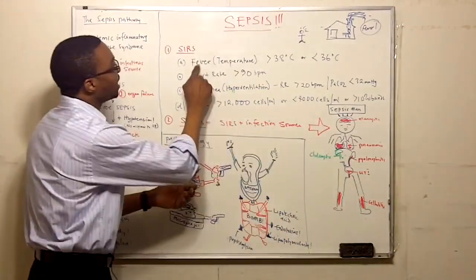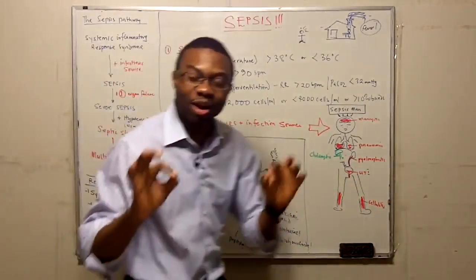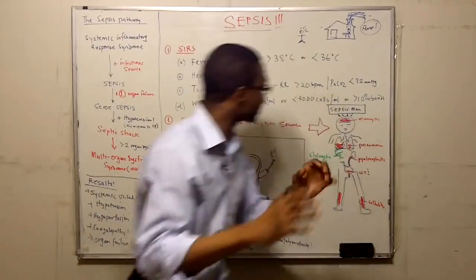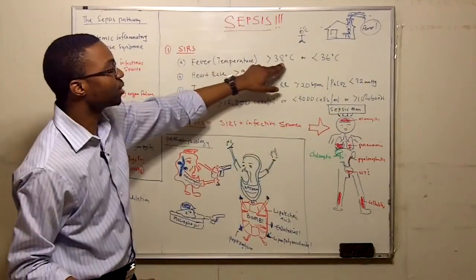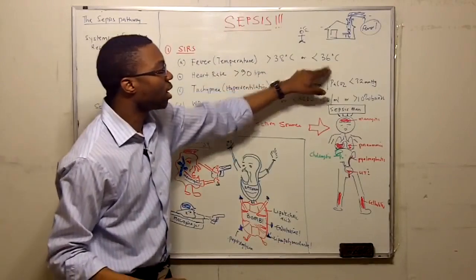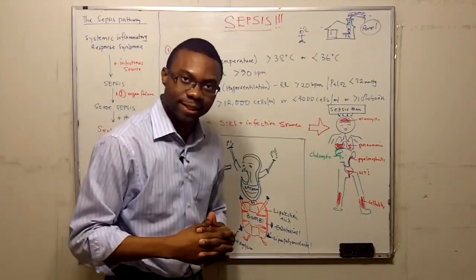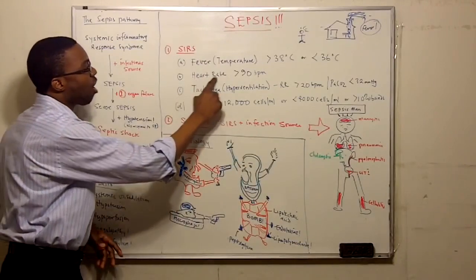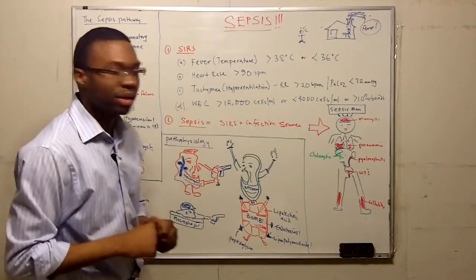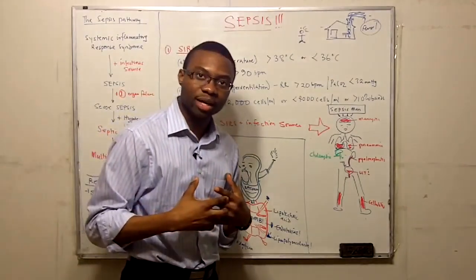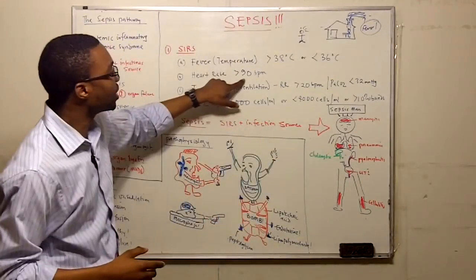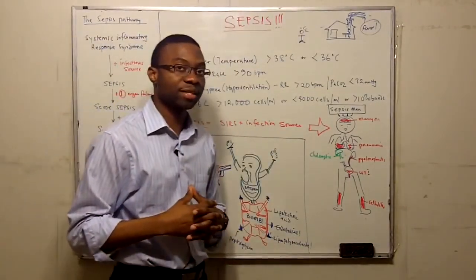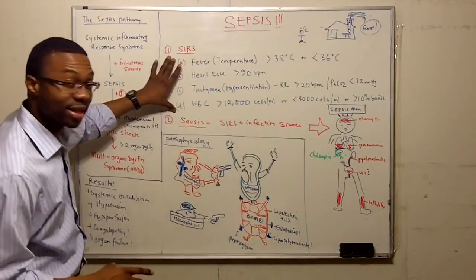So these patients at the beginning of systemic inflammatory response, they will have a temperature greater than 38 or less than 36. The second thing is their heart rate is going to go up. They're going to be tachycardic. They're going to have heart rate greater than 90 beats per minute. You need to memorize this.